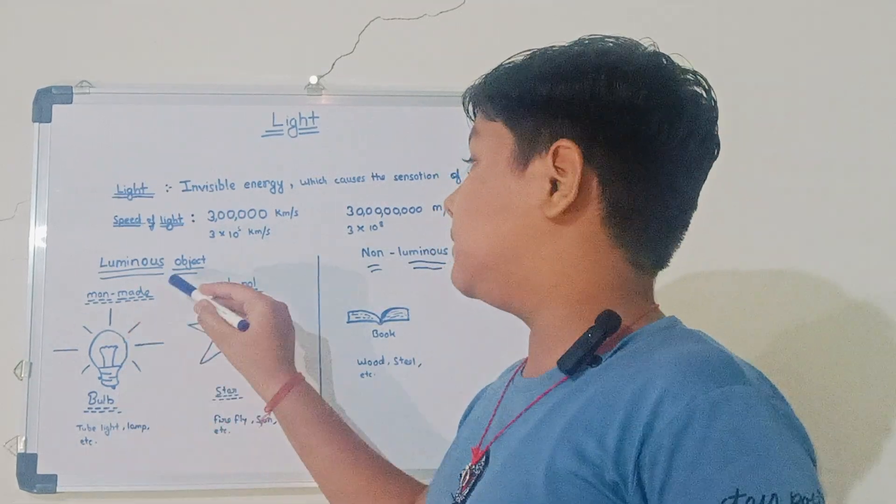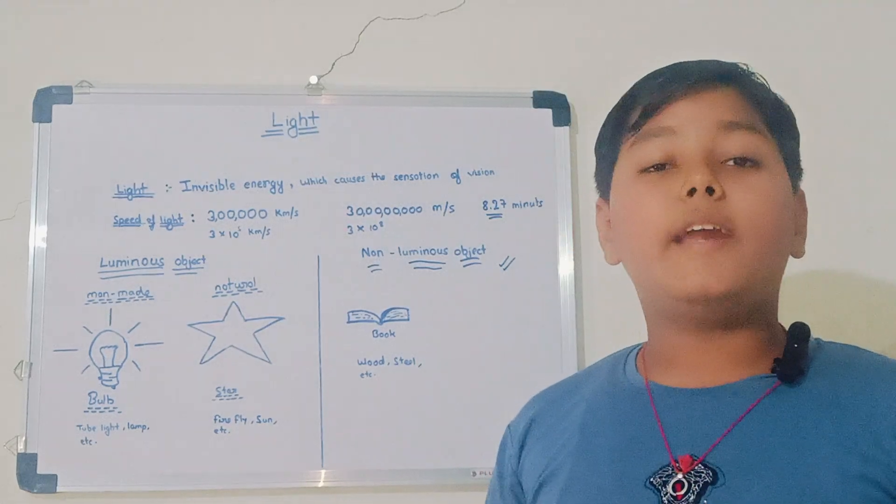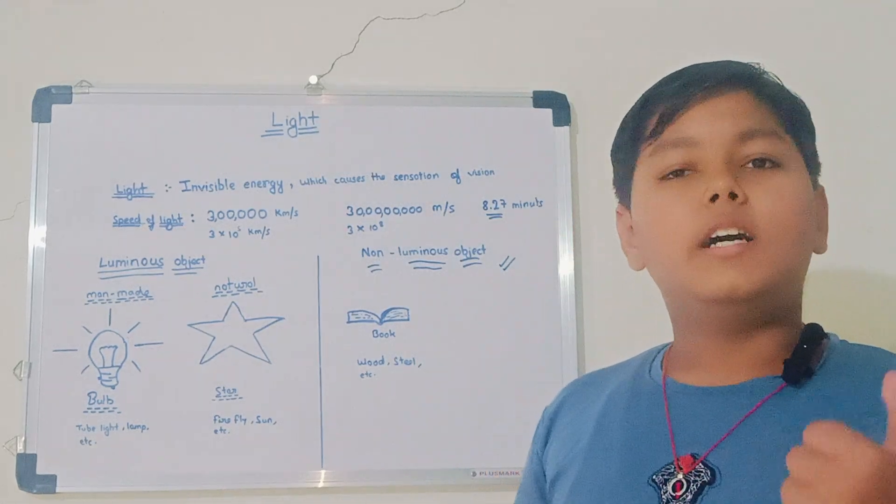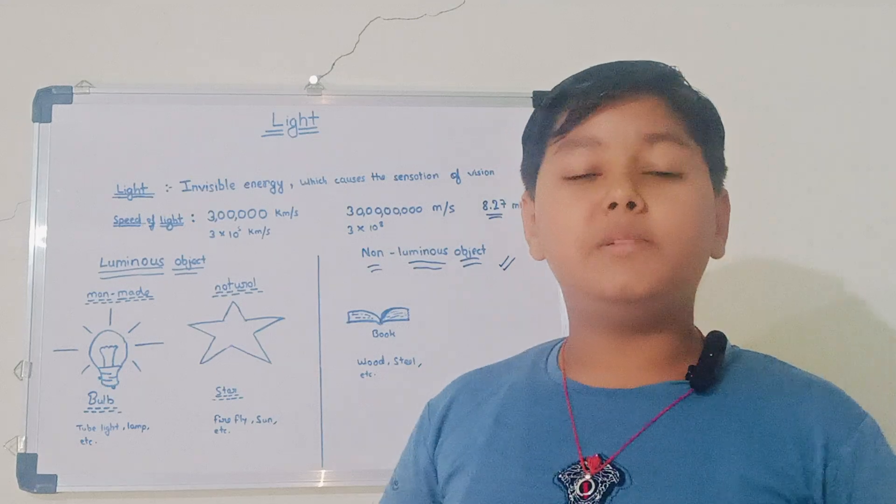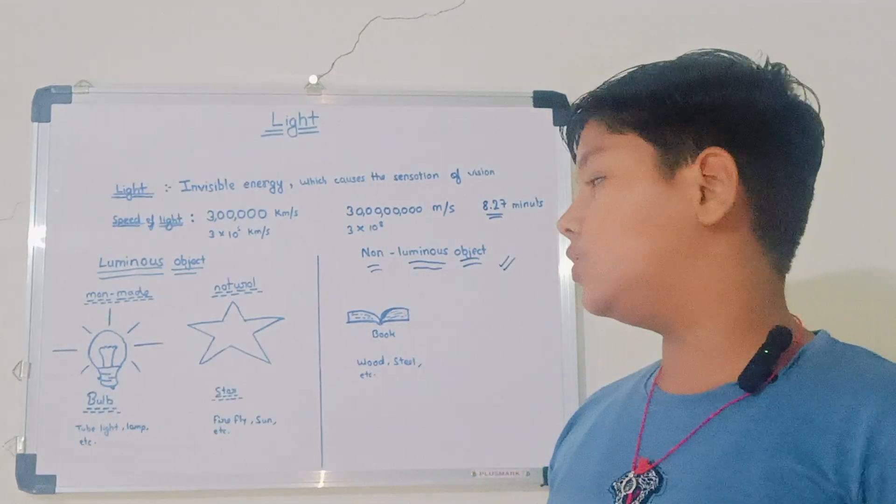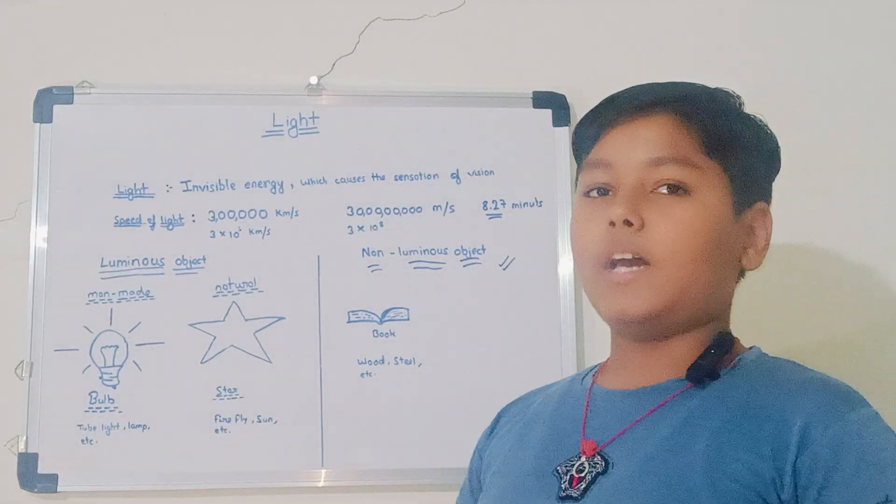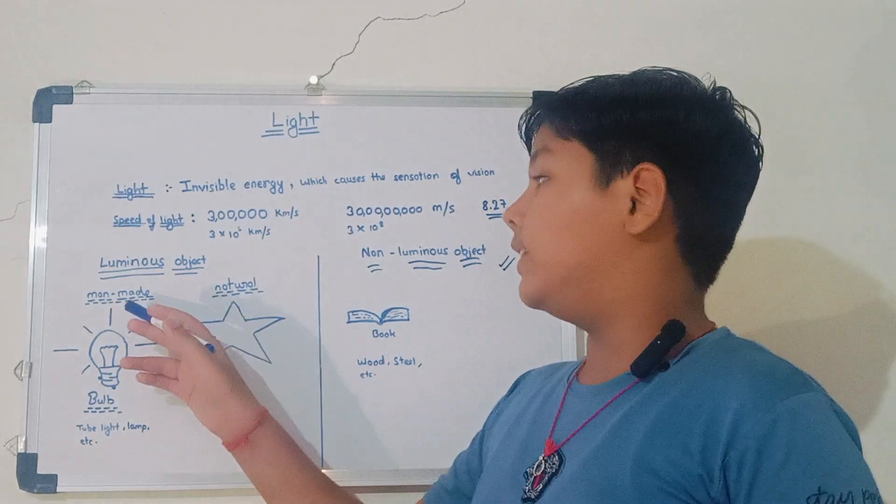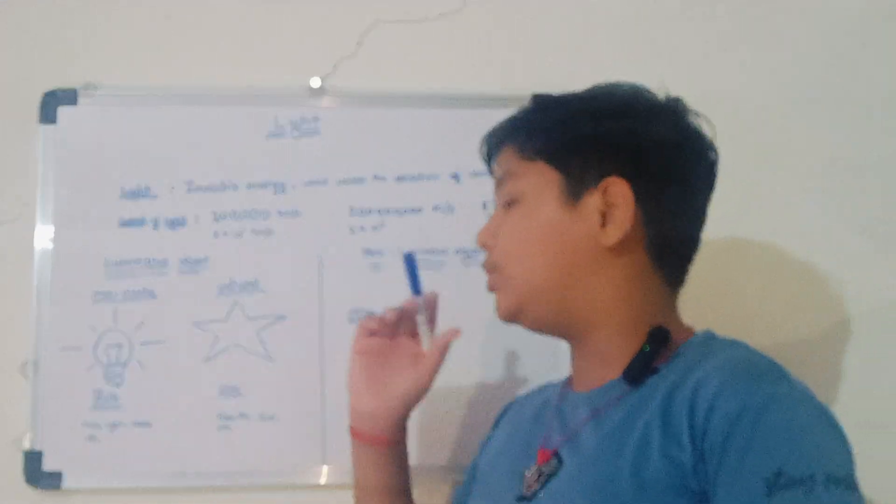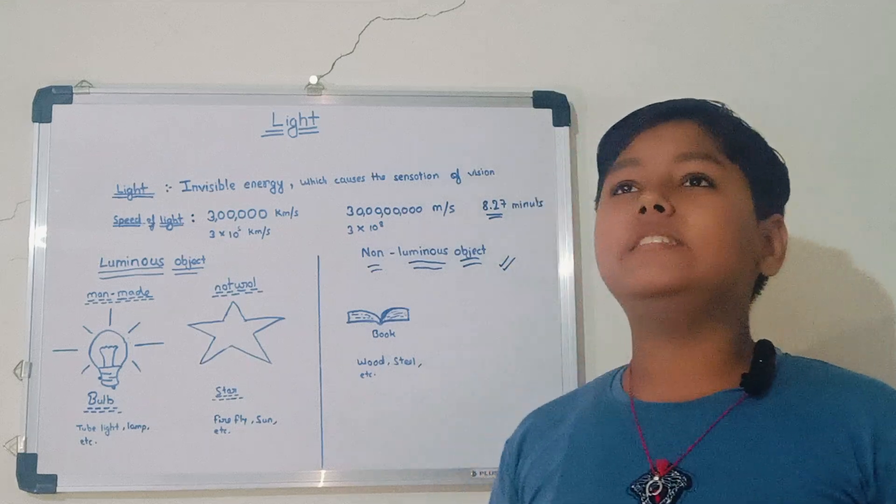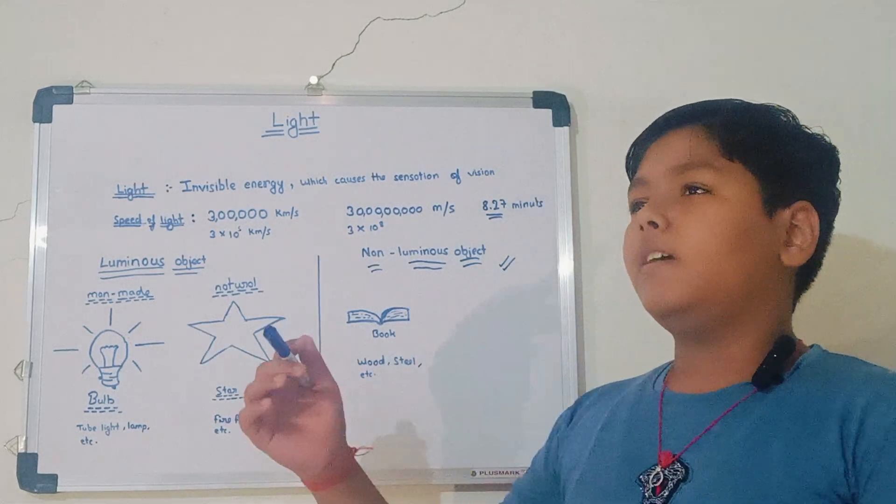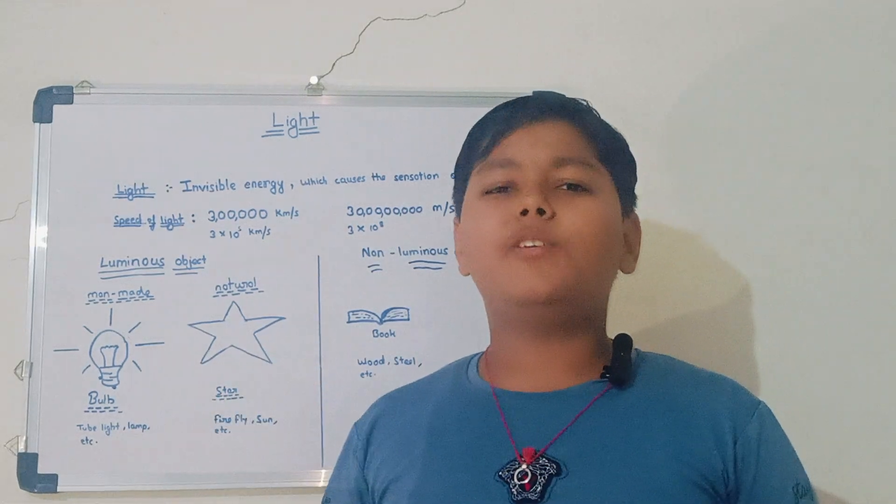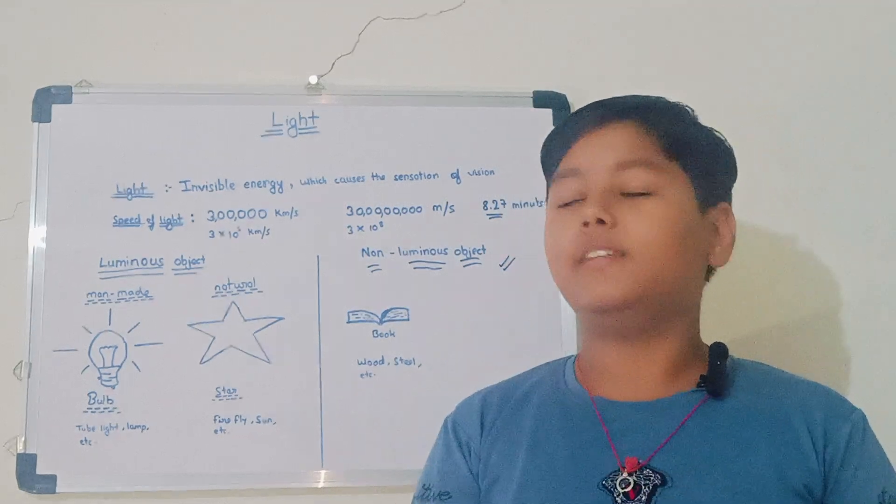Next, luminous body. The body which produces light of its own. The good example of a luminous body is your own mobile phone screen. There are two types of luminous body. First, man made body and natural body. Man made bodies are those that are made by man.